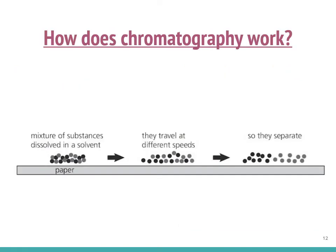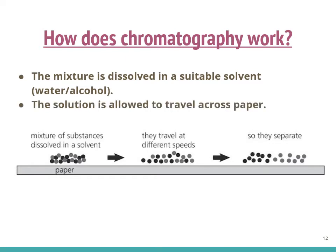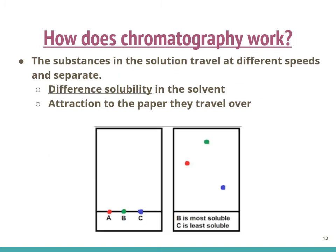How does chromatography work? In summary, the mixture is dissolved in a suitable solvent, for instance water or alcohol. Then the solution is allowed to travel across paper. Bear in mind that the substances in the solution travel at different speeds and separate, depending on their different solubility in the solvent and their attraction to the paper.